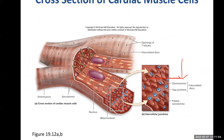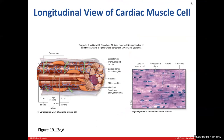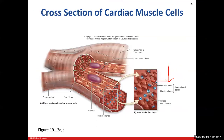Here you can see our sarcolemma with our T-tubule invaginations that allow the action potential to move down into the sarcoplasmic reticulum. Again, the sarcoplasmic reticulum is where we're storing calcium. We're going to learn another phenomenon about calcium with cardiac muscle, which I'll address in a moment. And here's that endomyosin — that's the areolar connective tissue on the outside of the cell.